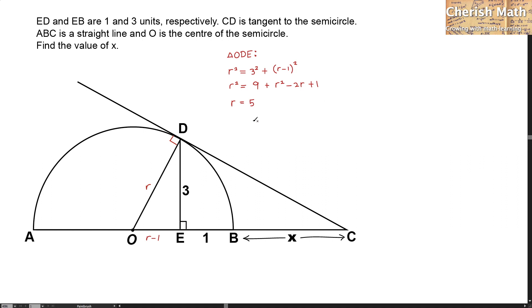Let me label the length in the diagram by using the radius as 5 units. This is going to be 5 units. For the length of OE, it is 5 minus 1, which is 4 units.